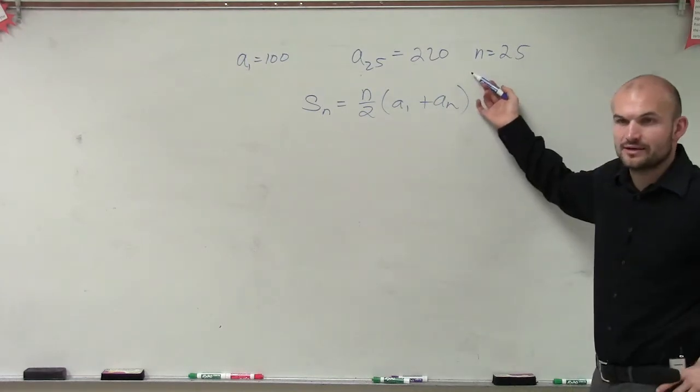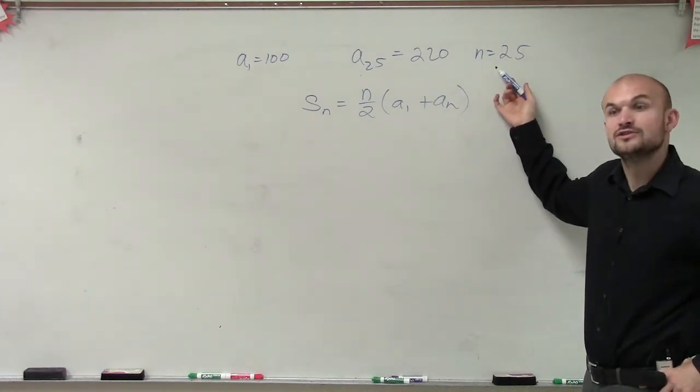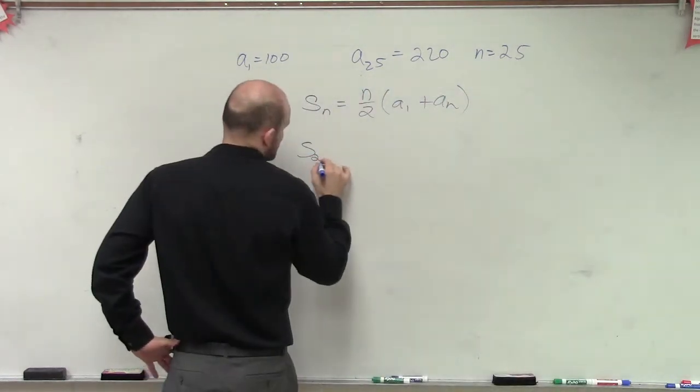Well, we know how many terms are we using? 25 terms. So we're going to find the 25th partial sum. To find the 25th partial sum, s of 25.